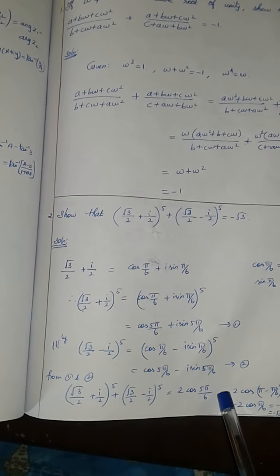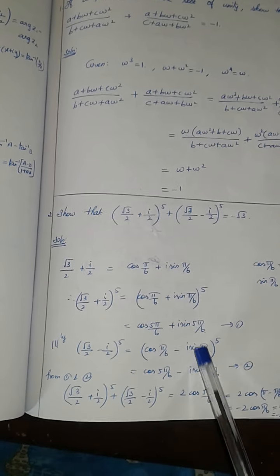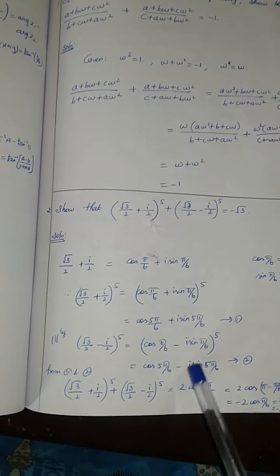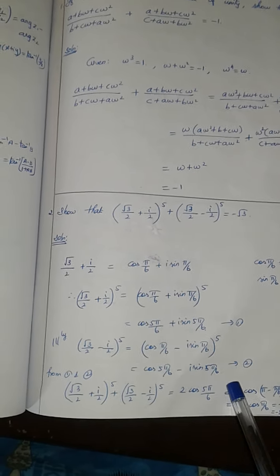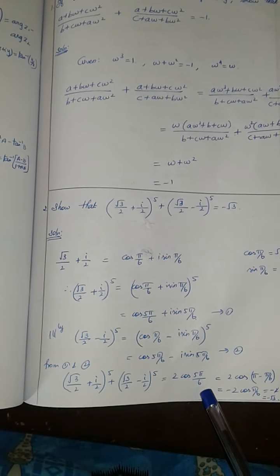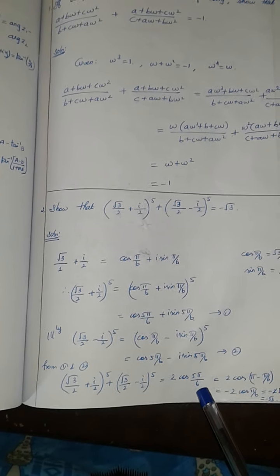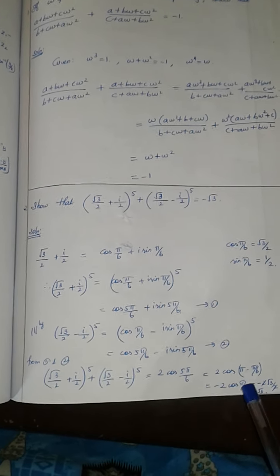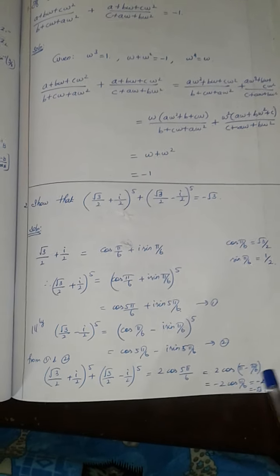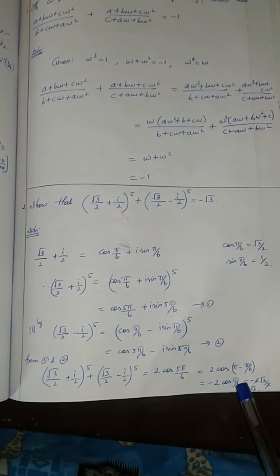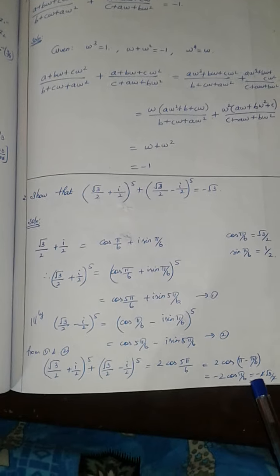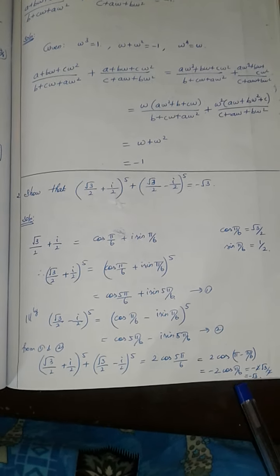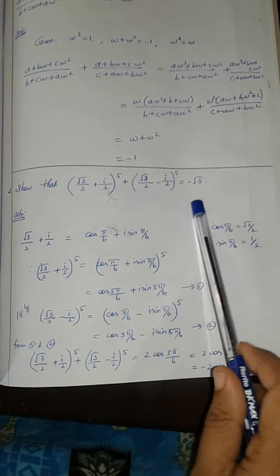So let's add. Cos 5 pi by 6 plus i sin 5 pi by 6 plus cos 5 pi by 6 minus i sin 5 pi by 6. The imaginary parts cancel. When we add, we get 2 times cos 5 pi by 6. For 5 pi by 6, we can write pi minus pi by 6. Cos 180 minus theta equals minus cos theta in the second quadrant. That means minus 2 cos pi by 6. The value of cos pi by 6 is root 3 by 2. This 2 cancels, giving minus root 3, which we have to prove.